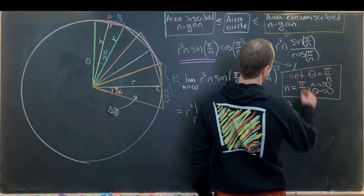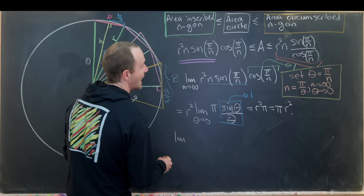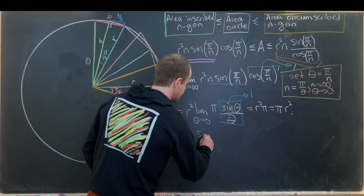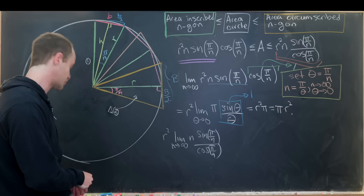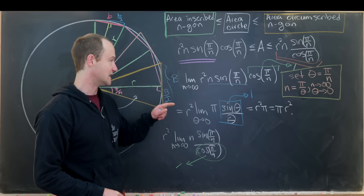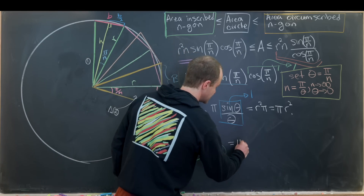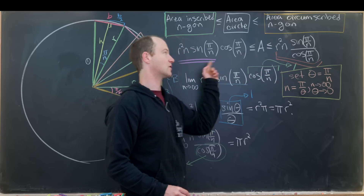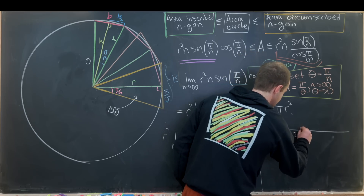For the circumscribed n-gon, we take the limit as n→∞ of r² · n · sin(π/n) / cos(π/n). The cosine factor again approaches 1, and by the same change of variables the remaining limit is identical, giving π r² as well. We've pinned the area of the circle between two quantities with the same limiting value, so the area of the circle is indeed π r².